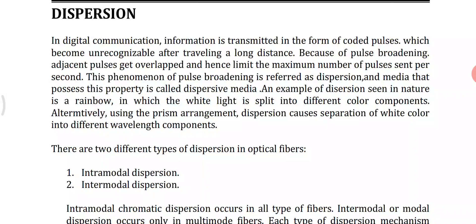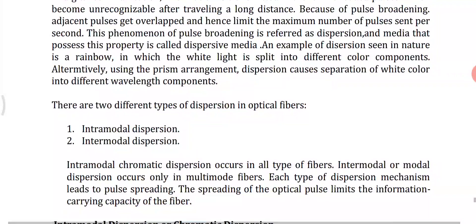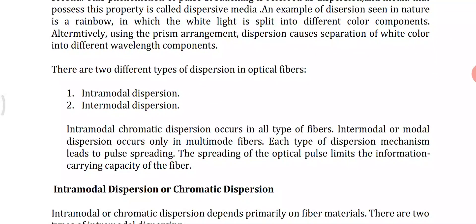Similarly, in a prism, dispersion causes white light to separate into different wavelength colors. There are two types of dispersion: intramodal dispersion and intermodal dispersion. Intramodal dispersion is classified into three types: first, material or chromatic dispersion; second, waveguide dispersion; and third, group velocity dispersion (GVD) or modal dispersion. The other main dispersion type is intermodal dispersion.